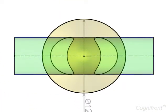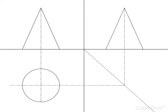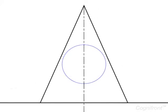Its top view would be a circle. From the top view, first draw the front view and then the side view of the vertical cone. The penetrating cylinder can be seen in its true shape in the side view. Draw a circle with its center on the axis of the cone and at a distance of 30 millimeters from its base.